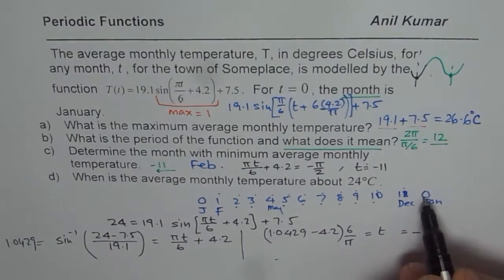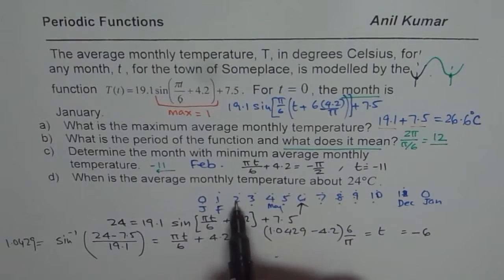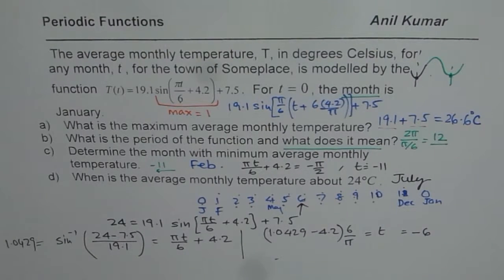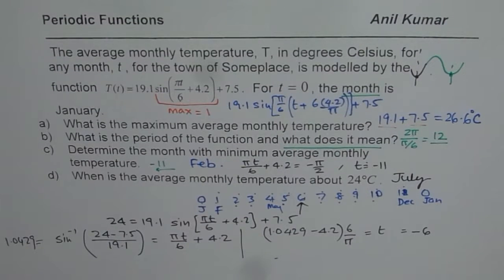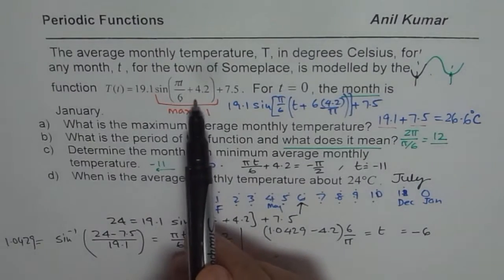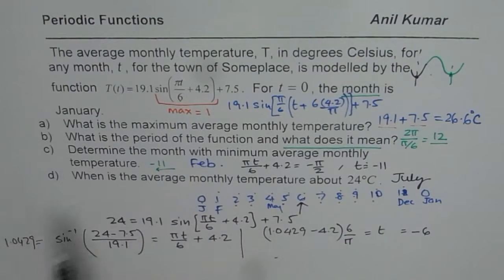When T = −6, we count back 6 months from January: January, February, March, April, May, June, July. So in July, the average monthly temperature reaches 24°C. That is how you solve such questions. To summarize: to find maximum temperature, equate sine θ = 1 (sine gives maximum at π/2) and solve for T. For minimum, set sine = −1, equate the argument to −π/2, and solve for T. I hope that helps. Thank you and all the best.